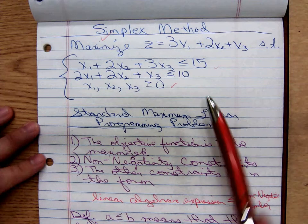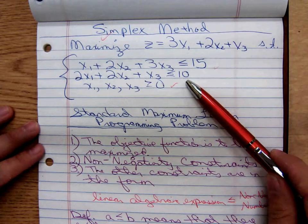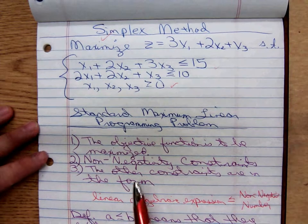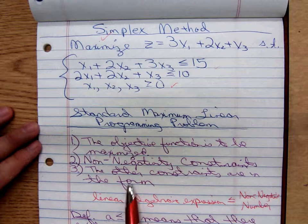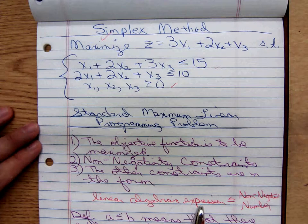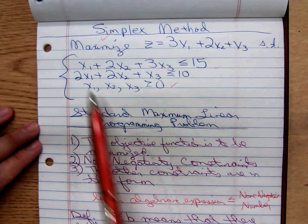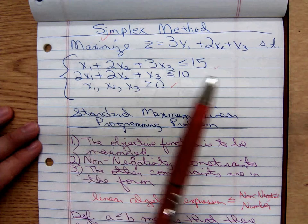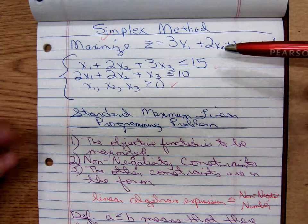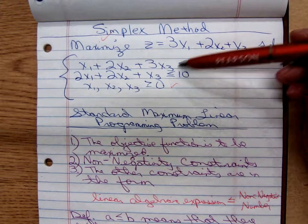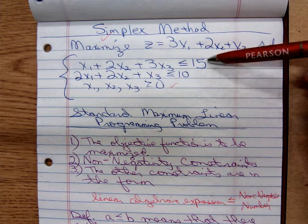We have non-negativity constraints. Yes, we certainly have those. And finally, the other constraints are in the form linear algebraic expression is less than or equal to a non-negative number. Notice, we don't have x squared being added together. They are less than or equal to a non-negative number.